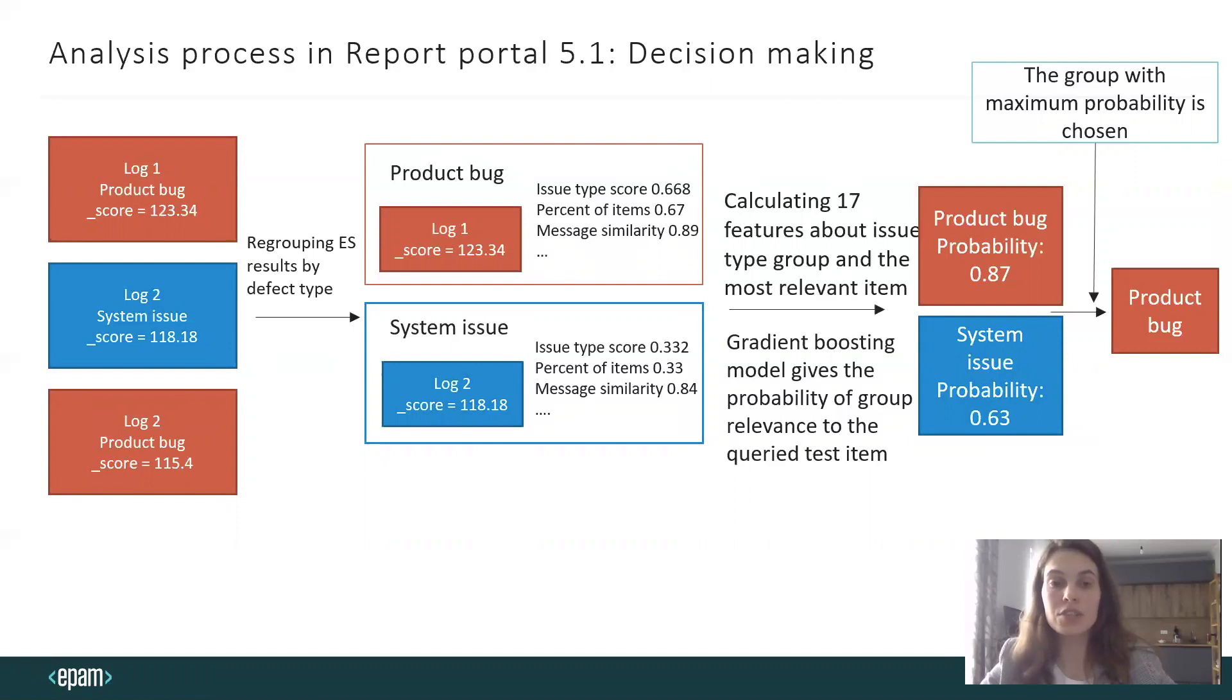All of them are 17 features, which are the input for our machine learning model gradient boosting. This model was trained to predict whether the group is relevant for our query test item or not. The model gives the probability for each group and the group with maximum probability will be chosen. Groups with probability less than 0.5 won't be considered as relevant at all. In our case, the product bug group has probability 0.87, and that's why we've chosen it as the group for our query test item.